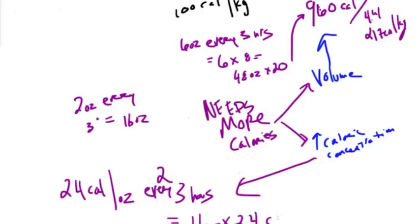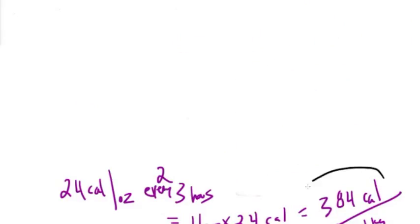16 ounces times 24 calories per ounce equals 384 calories. Divide that by his weight, 4.41 kilograms.